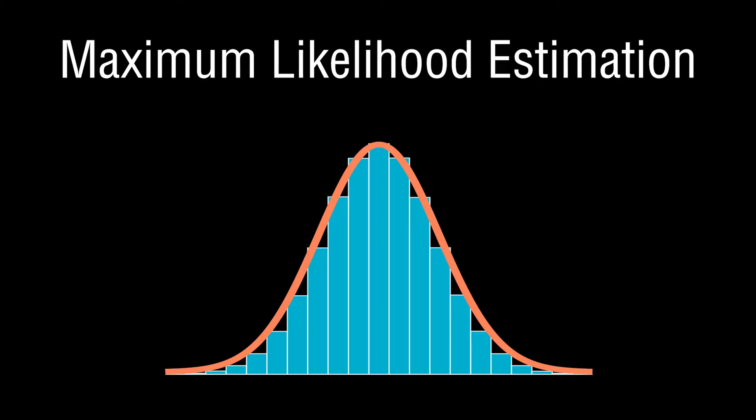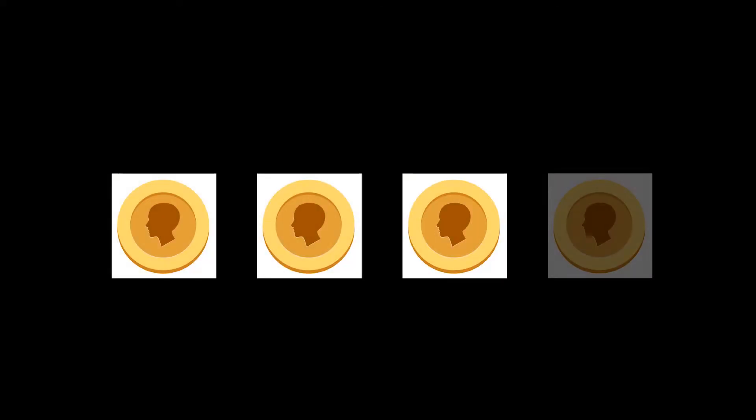Let's introduce maximum likelihood estimation by looking at the following situation. A stranger offers you a bet: you'll flip a coin, and if the coin is tails you'll win five dollars; alternatively, if the coin is heads, they'll win five dollars. You decide to take on this bet and four times in a row the coin comes up heads.